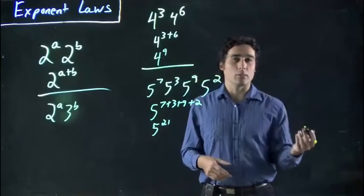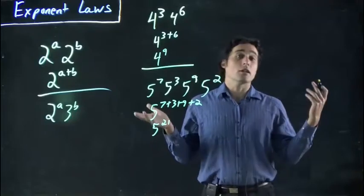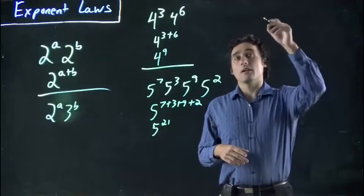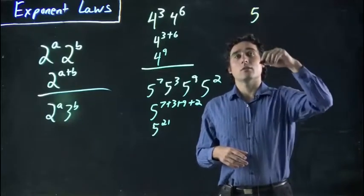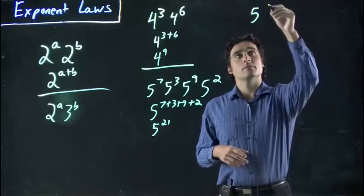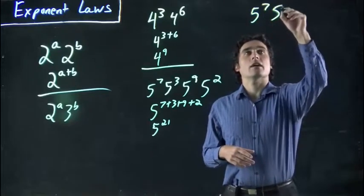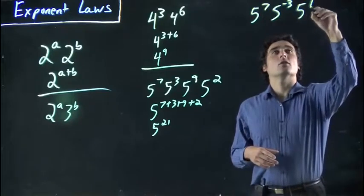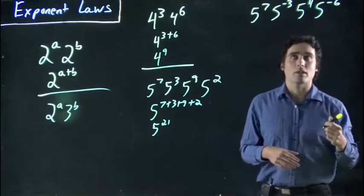But, we can also have negative exponents. And we're talking about the meaning of that, well, actually, you know what, I'll talk about the meaning of that probably in the next video. But, what is 5, if we add the same 5, and now we have 7, then we have 5 to the minus 3, and then 5 to the 4, and then 5 to the minus 6. What's going to happen here?